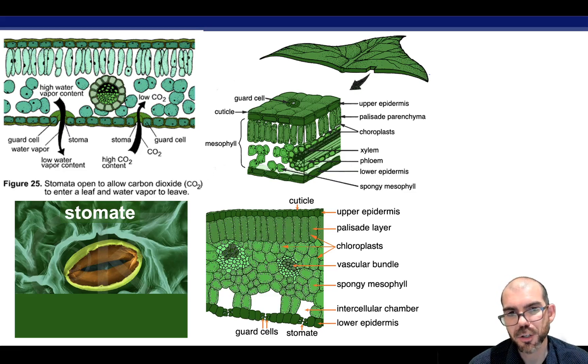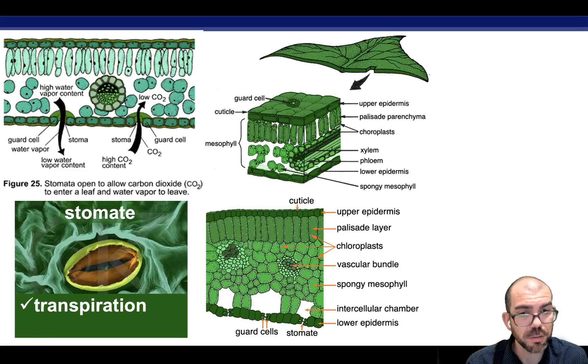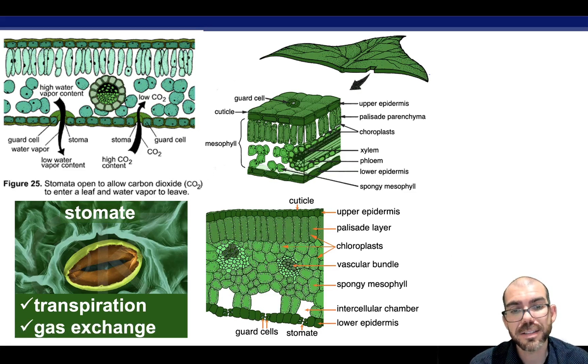Here is one of those stomates I mentioned to you. These are small openings on the surface of a leaf and they have two cells lining them called guard cells that are able to open and close. These are used for transpiration. Reminder, water goes up the roots through the stems and then evaporates out of the leaf. That happens at the stomate. And this is where all gas exchange happens. With photosynthesis, plants take CO2 in and release oxygen. And when plants do cellular respiration, they take in oxygen and release CO2.